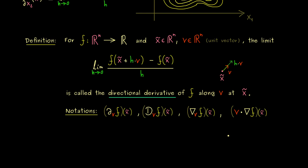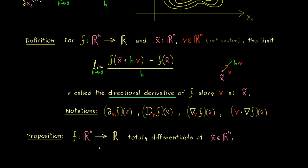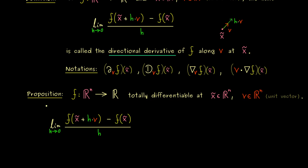Calculating this limit could be complicated depending on how your vector v looks. Therefore it's good to know that things get easier when we have a totally differentiable function f. This is something we can formulate as a proposition: take a function f defined on R^n which is totally differentiable at the point x̃, and a unit vector v. Then we expect this limit to exist.